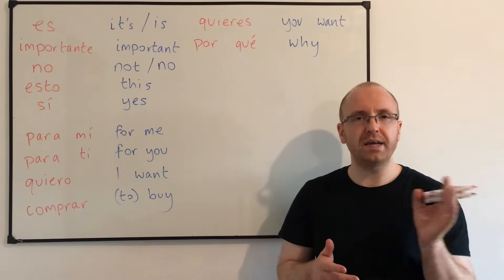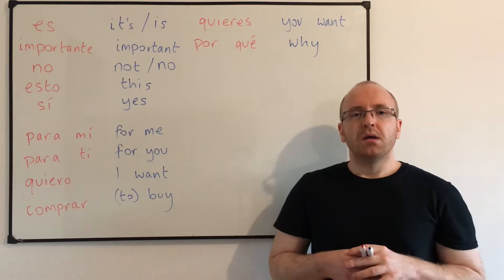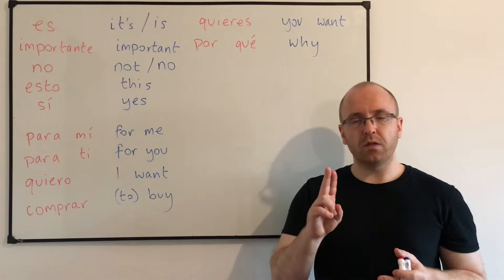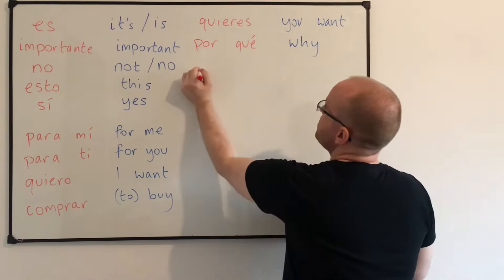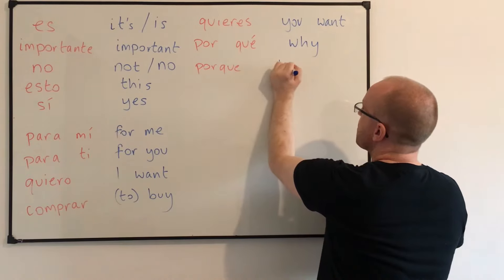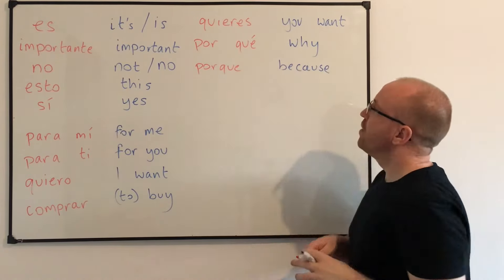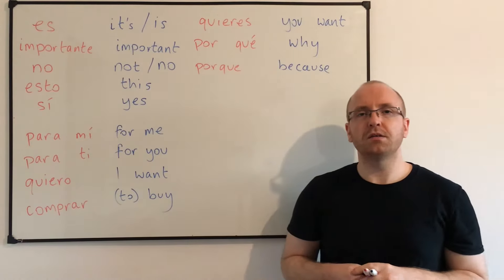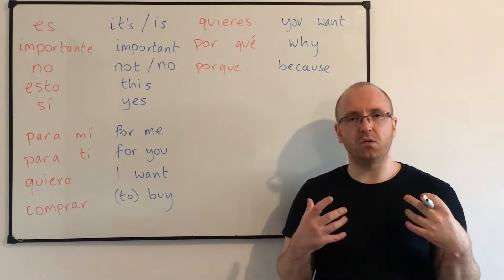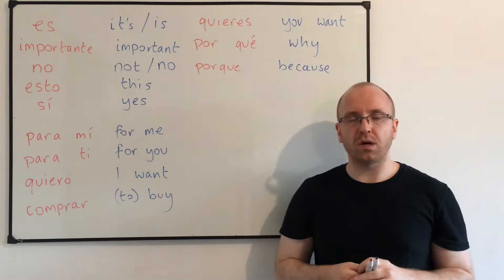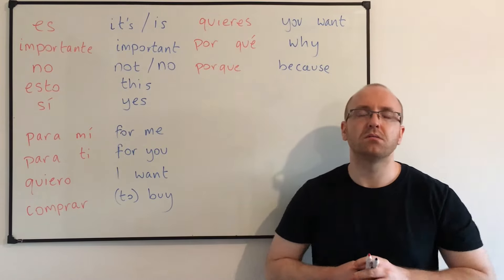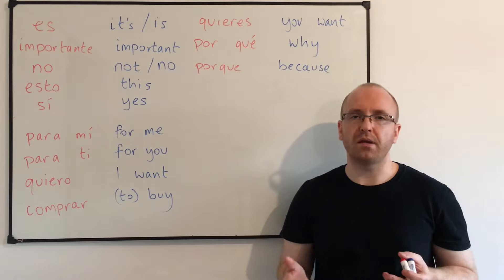Por qué no — why don't, why isn't. Now the word for 'because' is also the same word: 'porque,' but we join those two words together. So you've got two words for the price of one. Say that for me: porque. Good. And you don't need to raise your voice on the 'que' because we're not asking a question. So can you say 'because it's important'? Porque es importante. Perfect.